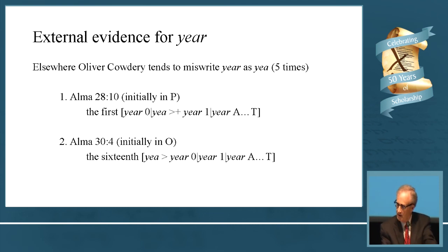If we look elsewhere in the manuscript, we see that Oliver Cowdery's got a problem with the word year. Five or six times, he writes the word year as yea. In Alma 28:10, the first year, original manuscript has year. Oliver, when he wrote the printer's, first wrote yea, and later he came in and put the R in slightly heavier ink. This means he's making a correction, probably when he proofed it. But it shows his tendency to drop the R. This is external evidence. We're seeing what Oliver's actually doing.